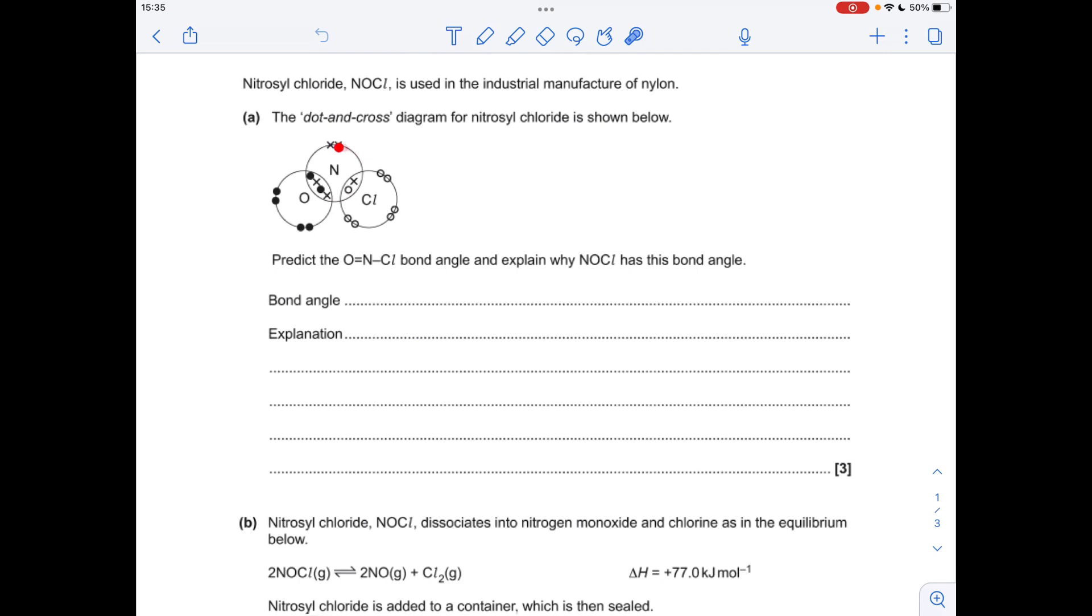So the bond angle around this nitrogen here, well, obviously it all depends on the number of electron regions around the nitrogen. So we've got one, two, that double bond counts as one region. So one, two, three. So starting angle is 120 degrees, but now we've got to look at the types of electron regions we've got.